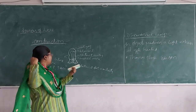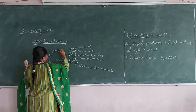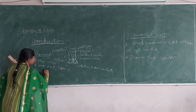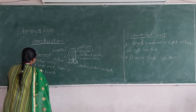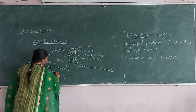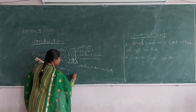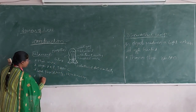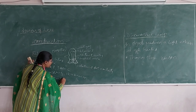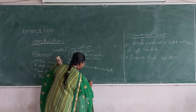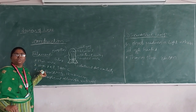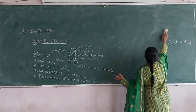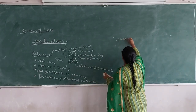Why do we choose tungsten filament? Number one, it has a high melting point of 3400 degrees centigrade. Number two, it has good resistivity — the value is 12.4 micro-ohm centimeter. And its temperature coefficient of resistance is very low — alpha equals 0.0036. Not only this, but tungsten also has good mechanical strength.